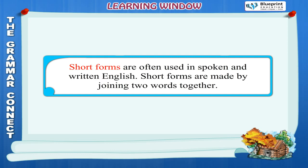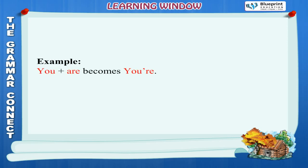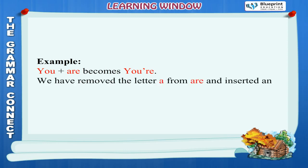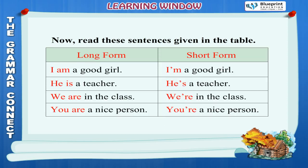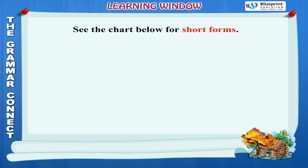Short forms are often used in spoken and written English. Short forms are made by joining two words together. Example: You + are becomes you're. We remove a letter and insert an apostrophe in its place. Examples: I am → I'm a good girl. He is → He's a teacher. We are → We're in the class. You are → You're a nice person.